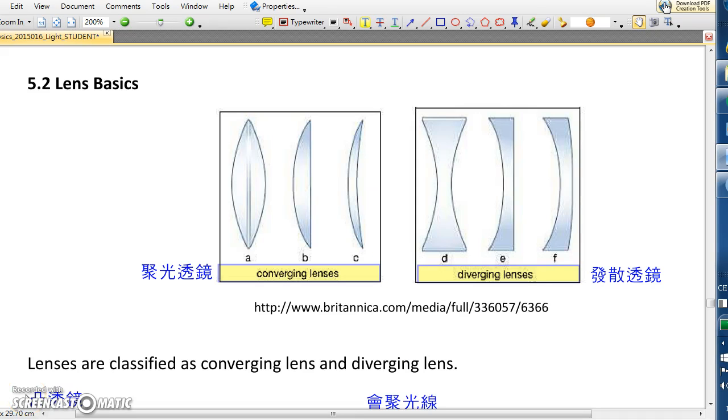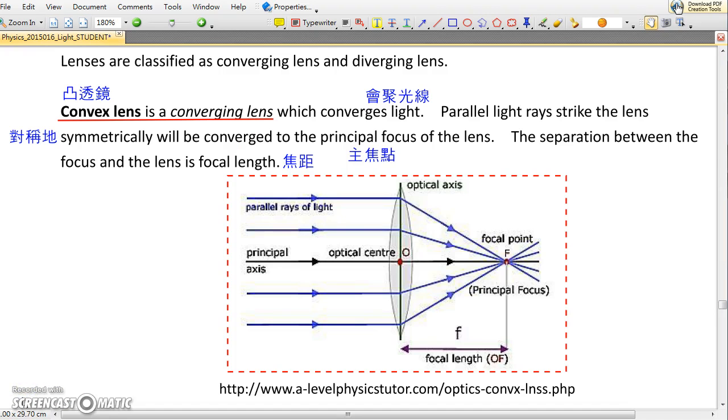Lenses are classified as converging lens and diverging lens. Convex lens is a kind of converging lens which converges light. When parallel light rays strike the lens symmetrically, they will be converged to one single point called principal focus. The separation between the lens and the principal focus is called focal length.